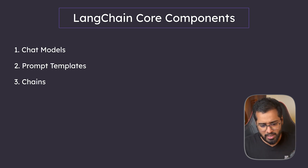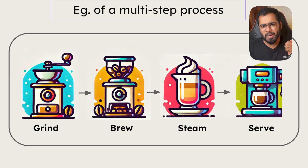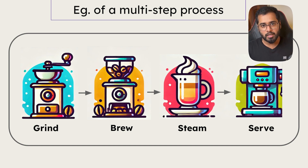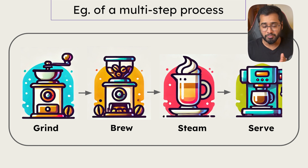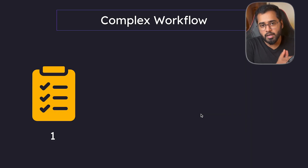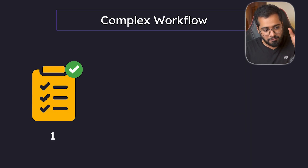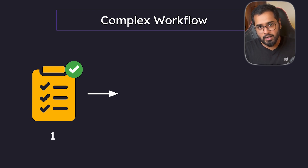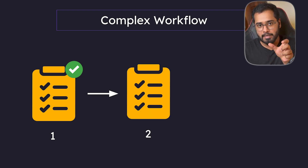Here's a real world example. Imagine chains like making a coffee — first you have to grind it, then brew it, then steam it, and then serve it. So that's exactly what we're doing here as well. If there is a complex workflow, we'll be dividing it into smaller tasks, and once the first task is done, the result of that is passed to the second task.